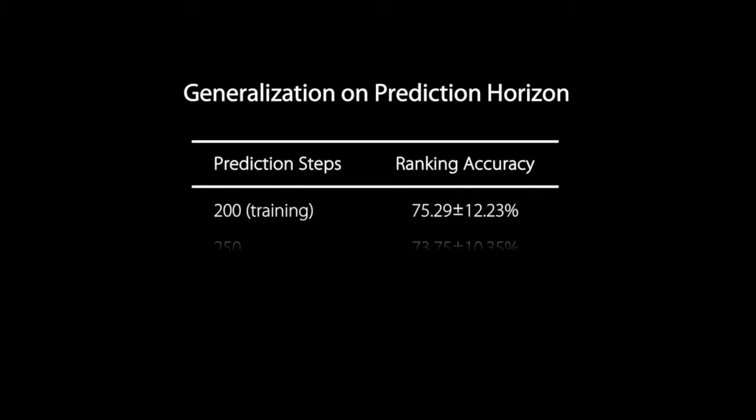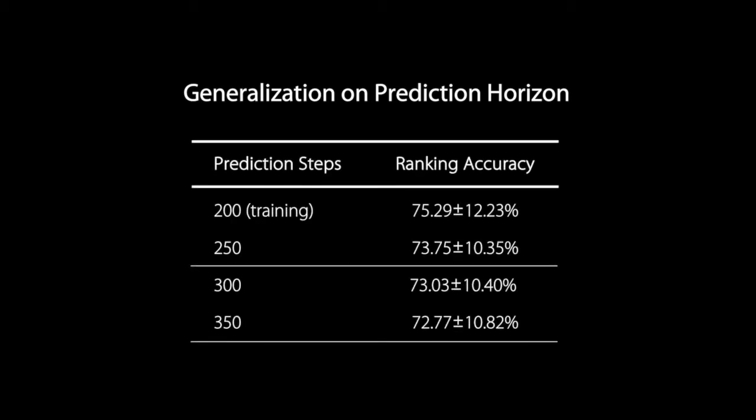We conducted extensive tests to check the generalization ability of our system on longer time horizons. Specifically, the longest episode the hider robot experienced during training is 200 steps. During testing, we asked the hider robot to give predictions beyond 200 steps, up to 350 steps. Our results suggest that our system learns to generalize to variable lengths of episodes.